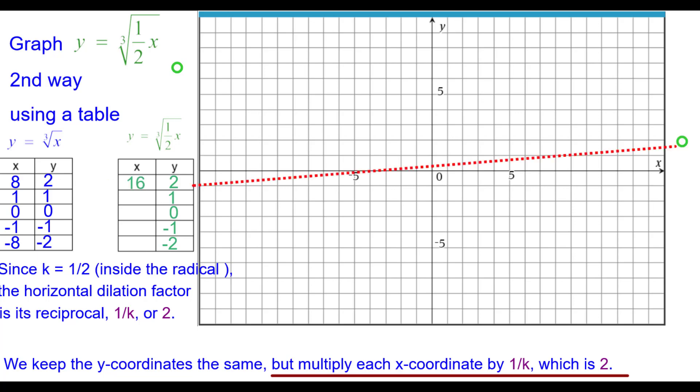We will plot sixteen comma two. One times two is two. Two comma one. The origin is not changed at all by that factor of two.